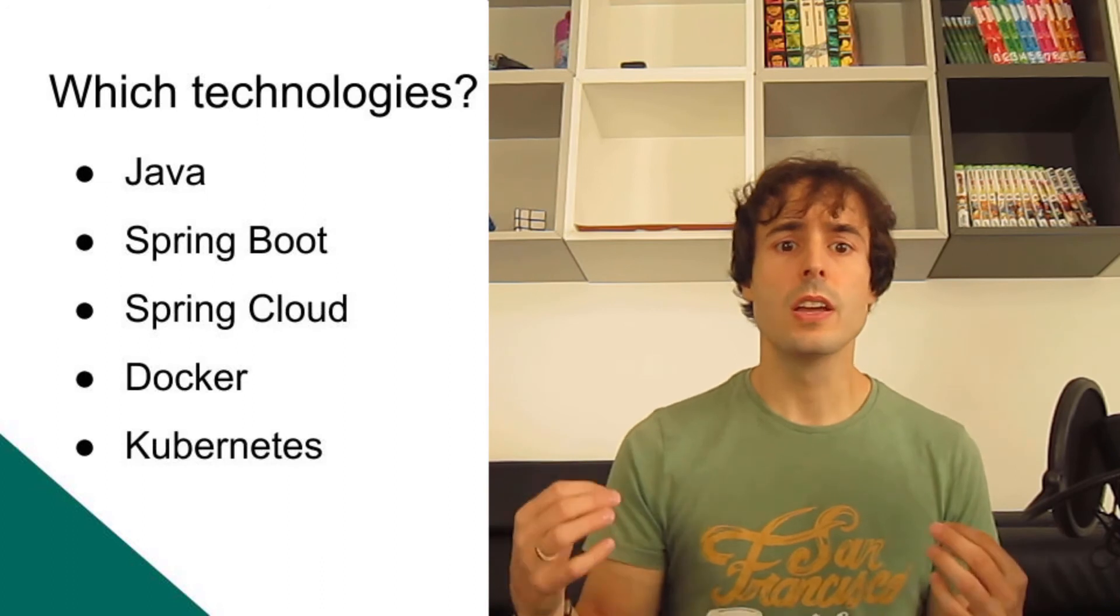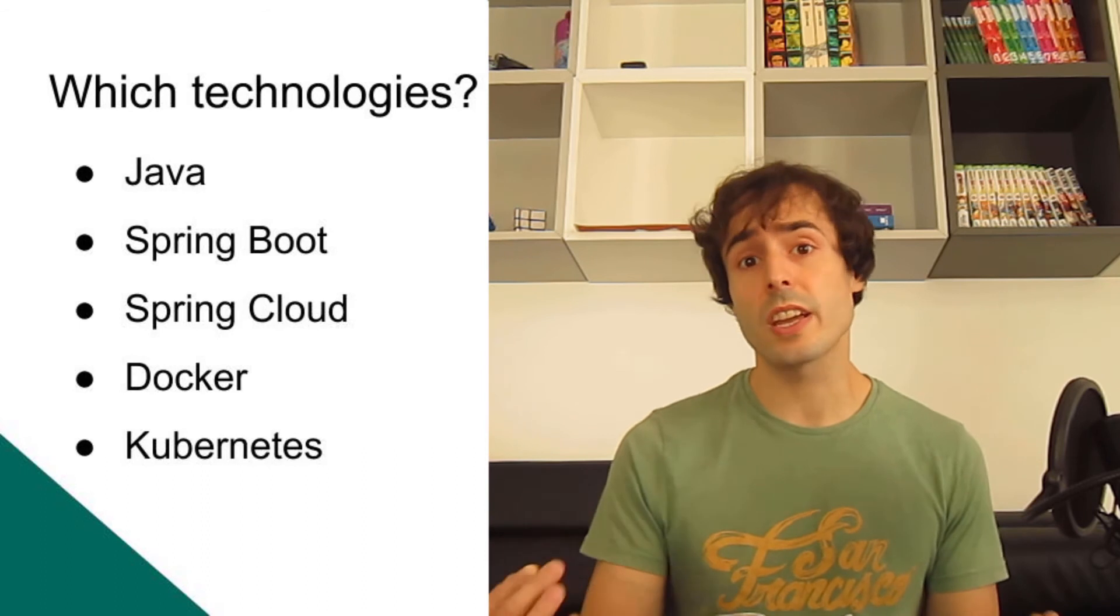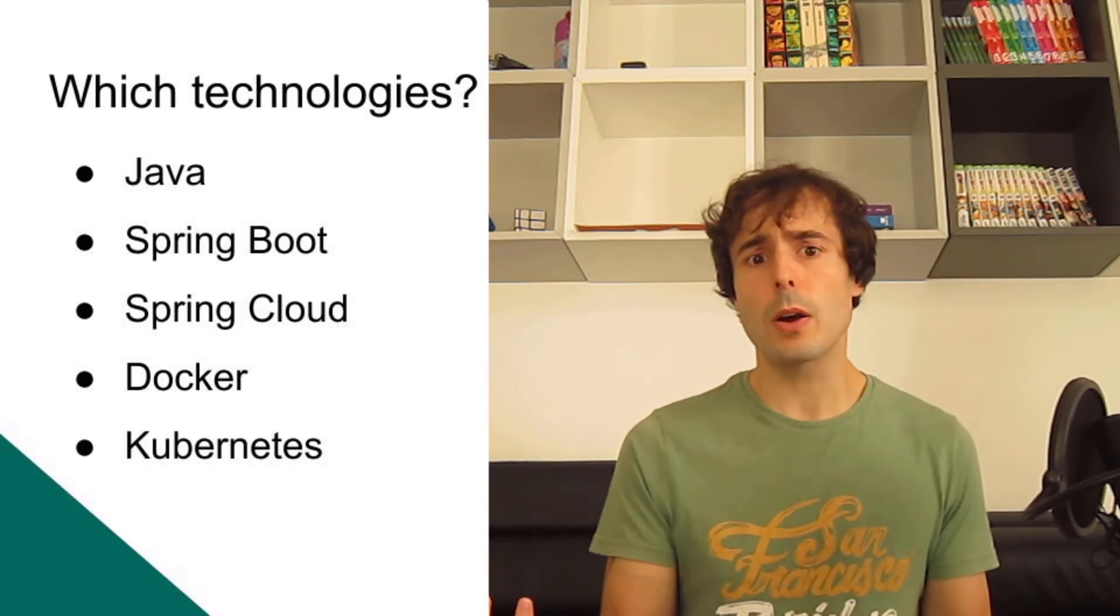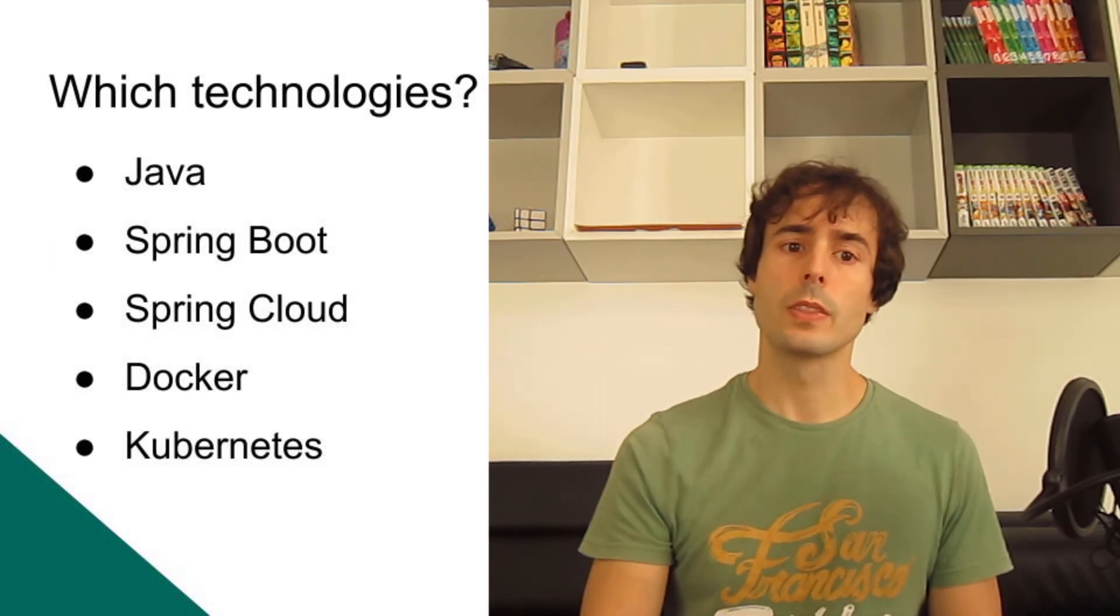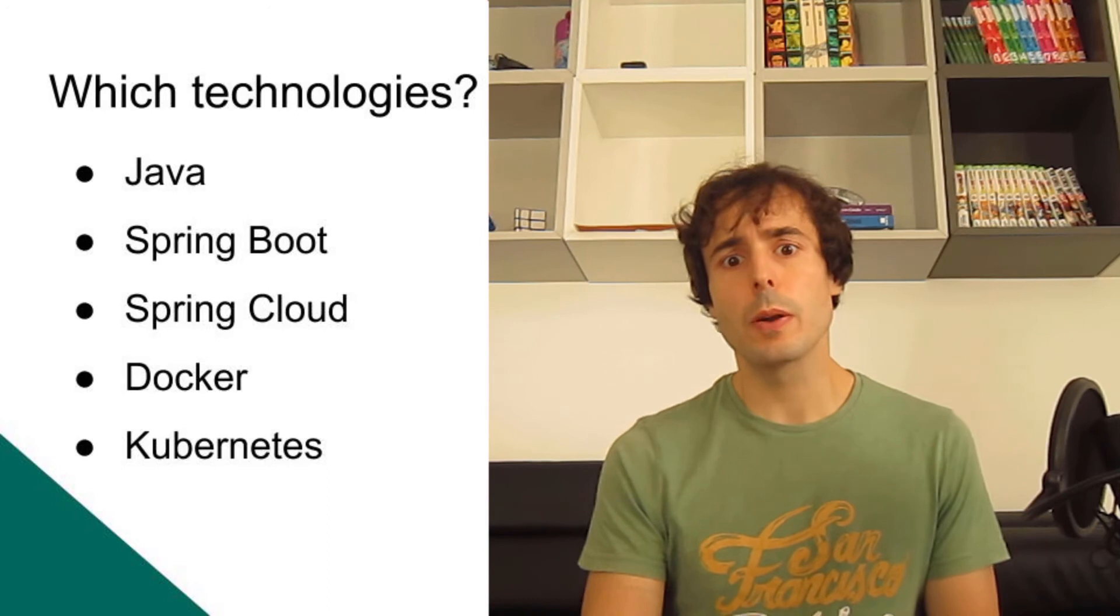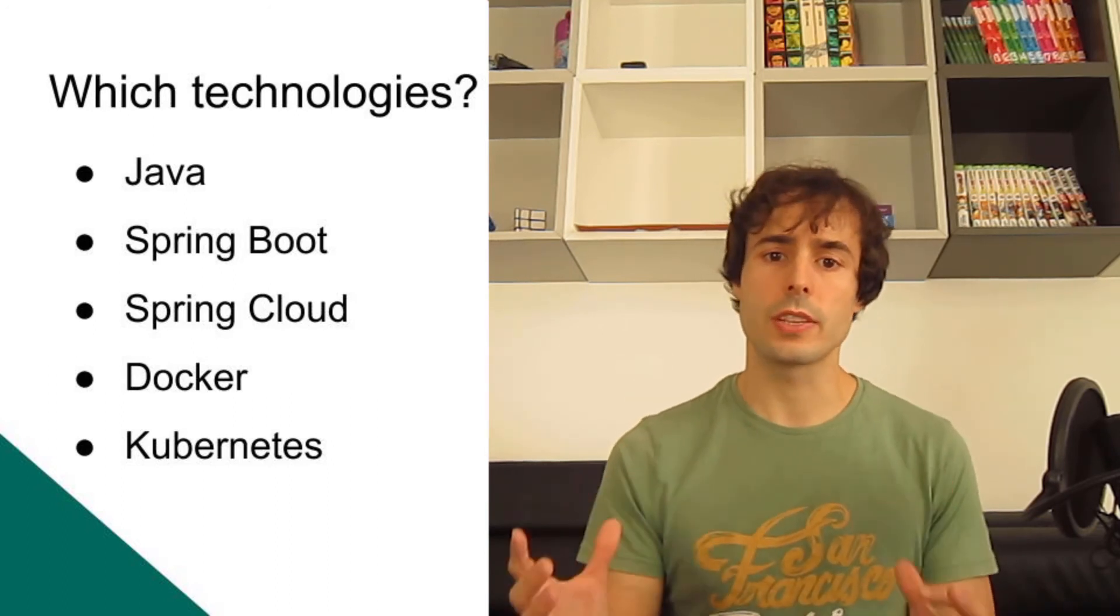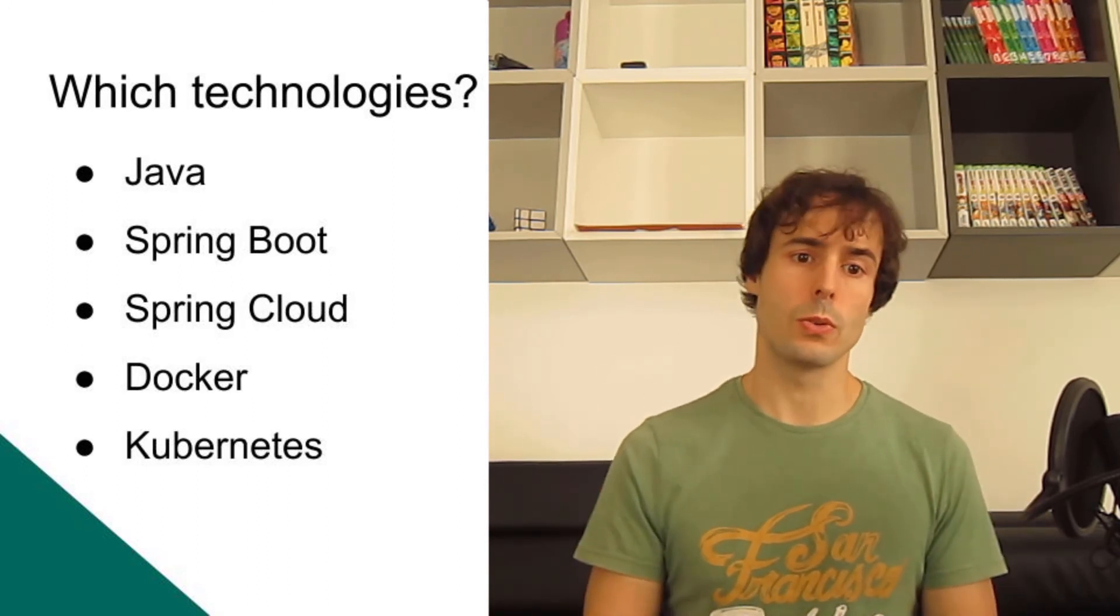Now that I have chosen this architecture, I have to choose the technologies. I'm a Java developer with more than 10 years of experience, so I will do it with Java. When talking about web applications in Java, the next topic is Spring Boot. A lot of useful tools are available in the Spring Cloud libraries. And each microservice will be running in a Docker container. And to orchestrate all of this, Kubernetes, of course.